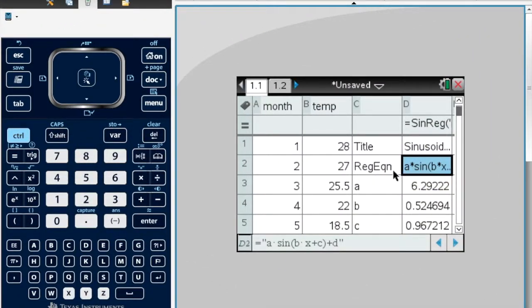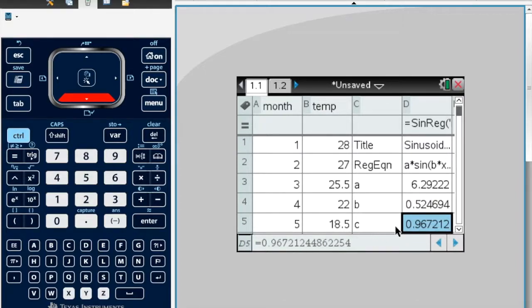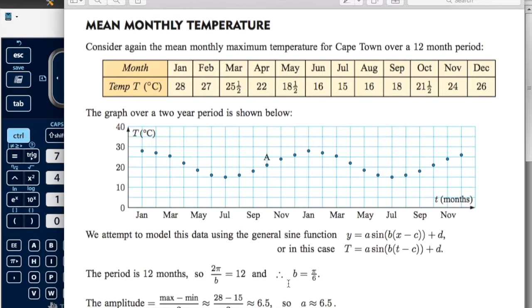So our function is A is 6.29, B is 0.525, C is 0.967, which is very different from their value of C.